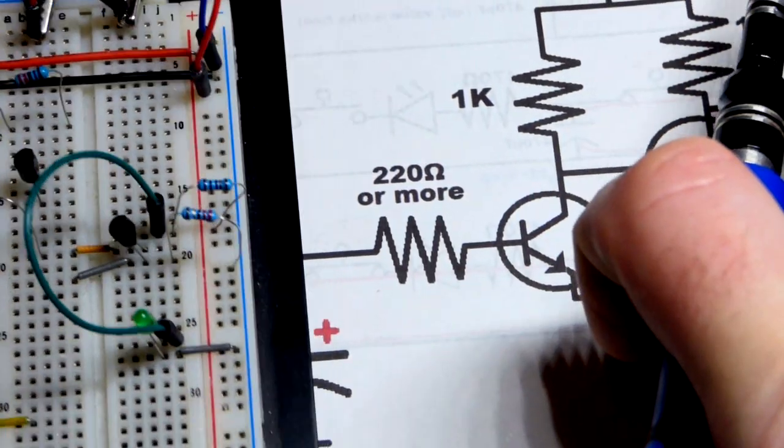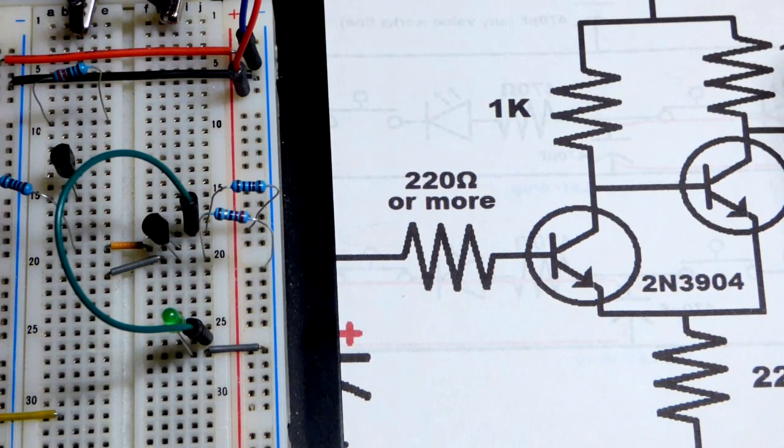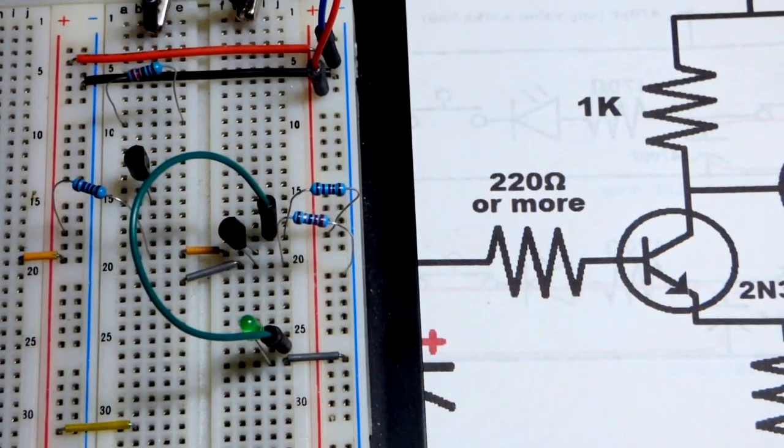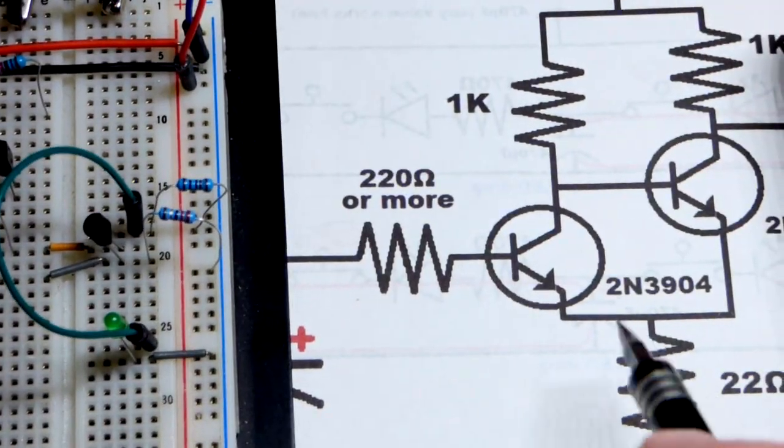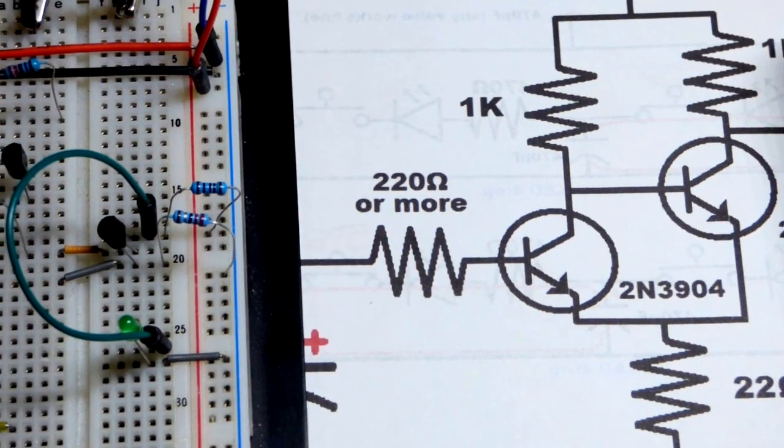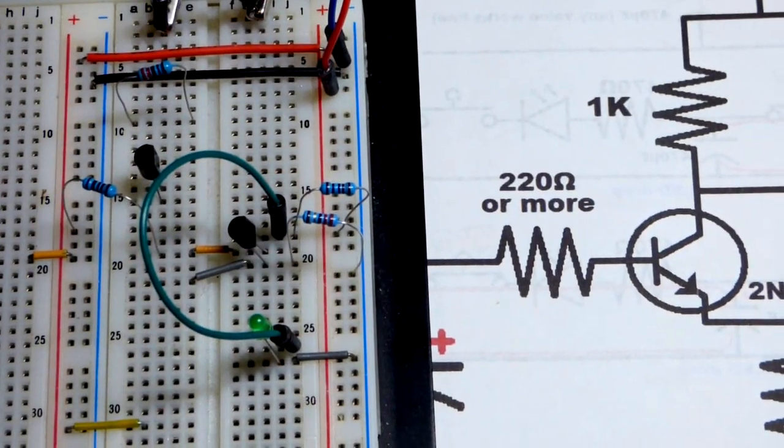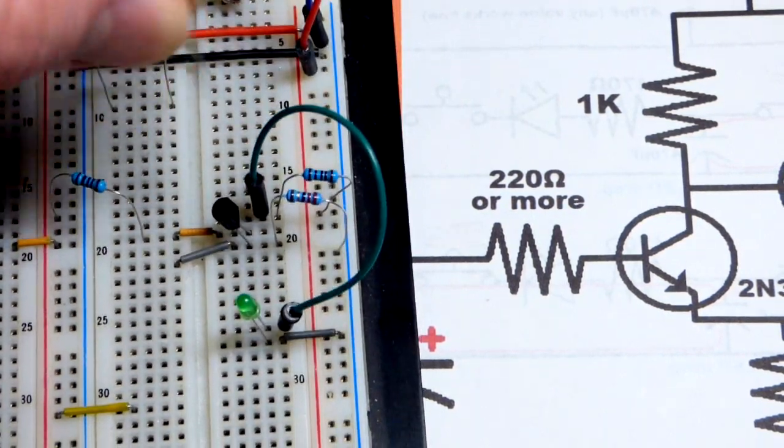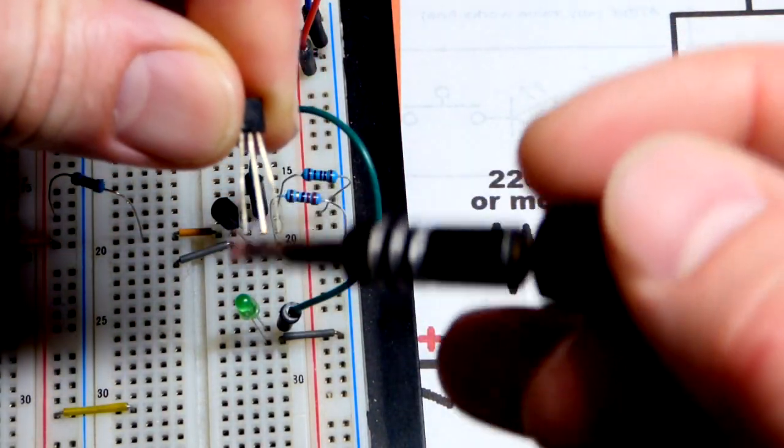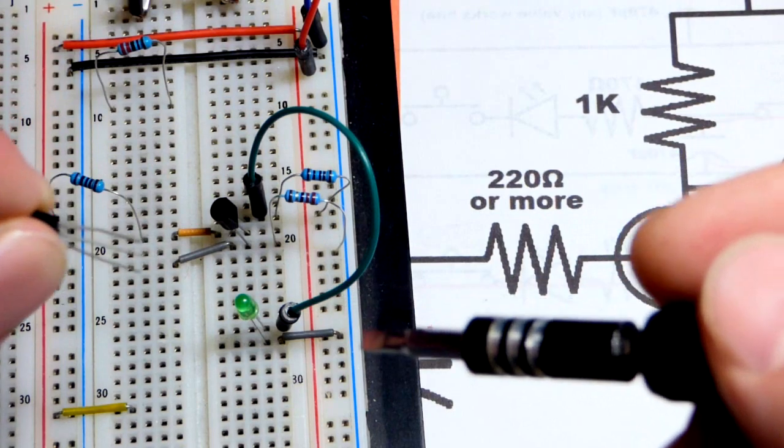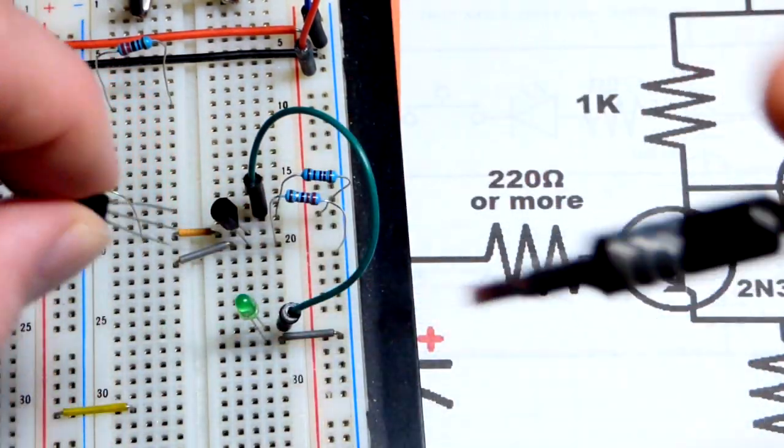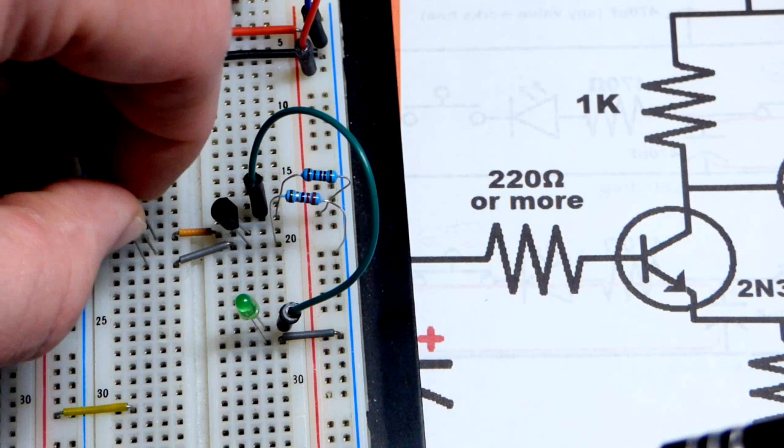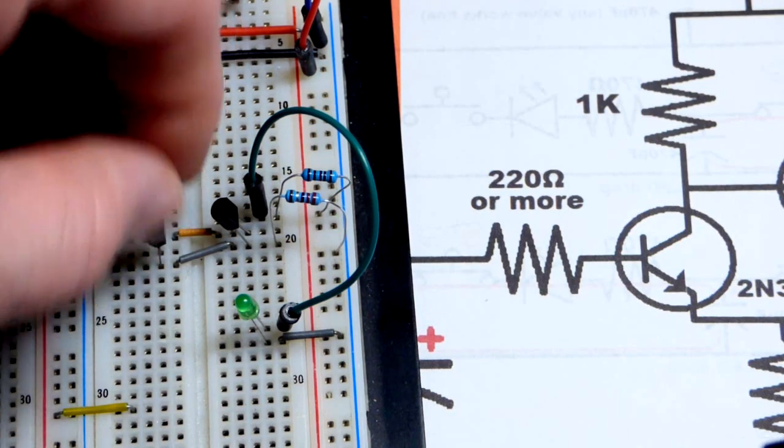So now we'll look at the second transistor. So they're both 2N3904s, NPN type bipolar junction transistors. Let's get that jumper out of the way. Same pin layout, the emitter left base middle collector to the right. So we'll turn it that way, flat side facing right.